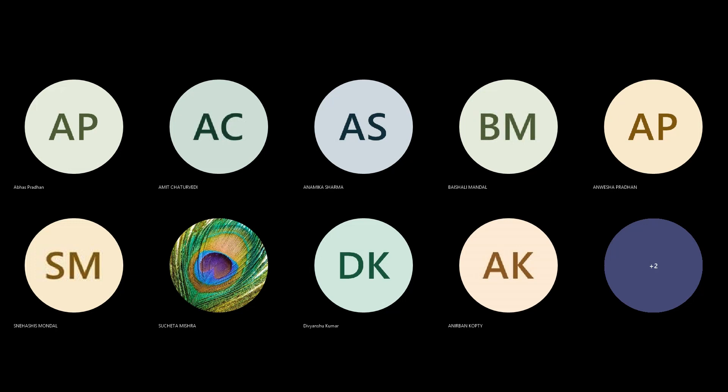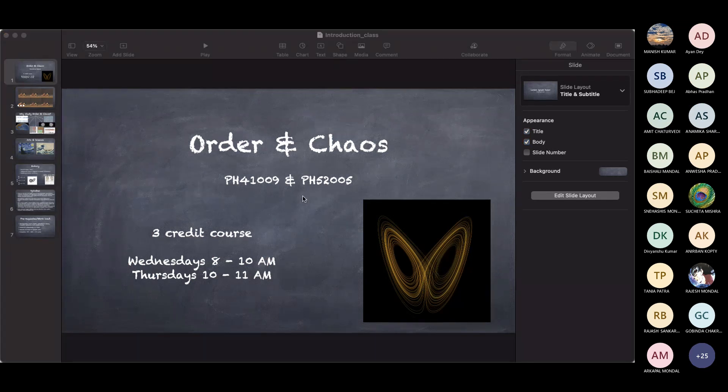We have three hours per week. Someone confirmed that the slot is Thursday 10 to 11. The C4 slot is on Thursdays from 10 to 11 — you can check the timetable at timetable.iitkgp. Yes, C4 is the fourth slot, from 10 to 11. Good.